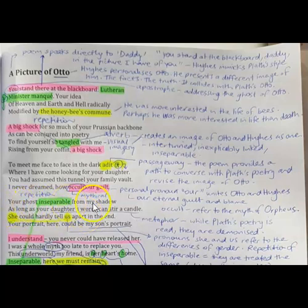Your ghost inseparable from my shadow. He's saying that they are a continuation of this idea of them being entwined. I think it's a really nice image, that he's a ghostly apparition and Hughes is a shadow of his former self. It's not about the physicality being taken from him.